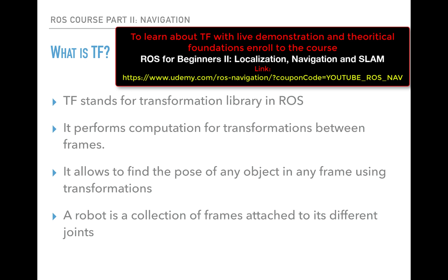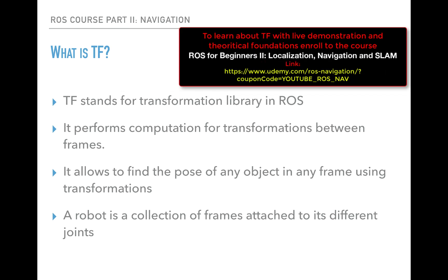The tf package performs the computation needed for the transformation between frames and allows you to define the position of objects in space by applying the theory presented in previous lectures. In addition, a robot is defined as a collection of frames attached to its different joints, like its body, its sensors, and its actuators. To define the position of each component of the robot with respect to each other, I will explain later how these frames are defined in the tf package.